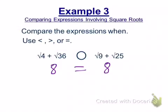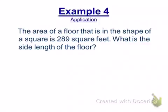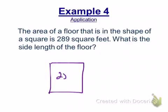Last example. I told you it was a short lesson. The area of a floor that is in the shape of a square—let's put a square here. The area is 289 square feet. What is the side of the floor? Is it the square root? It's 17. It's 17. Would it be the square root because of the area? No, no, no. It would be the square root because it's a square. It's 17.